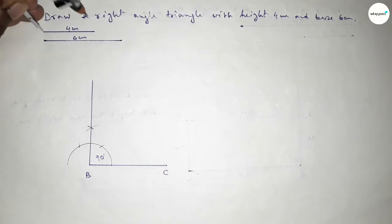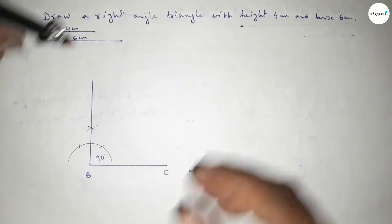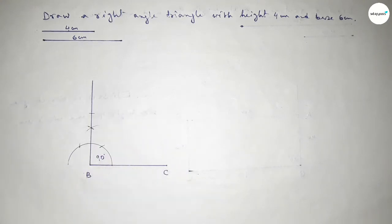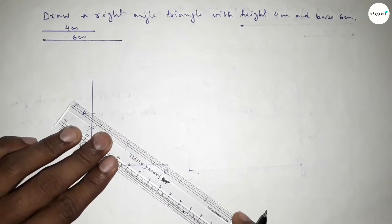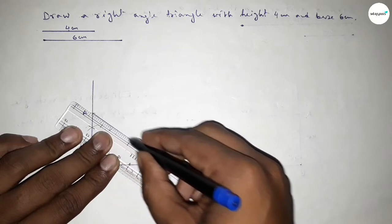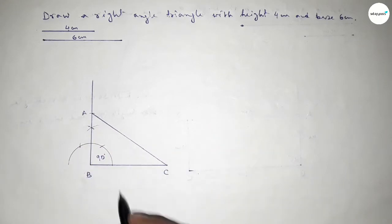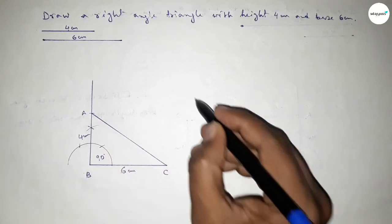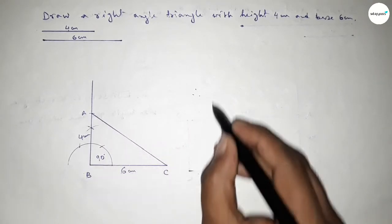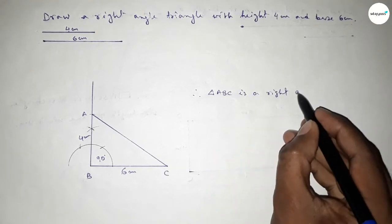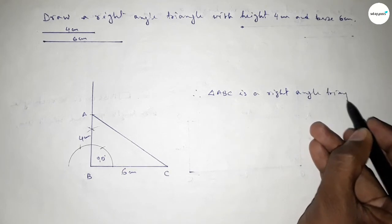Now taking the length of 4 centimeters using the compass, placing it at point B and marking point A. Joining A and C to get triangle ABC — this side is 6 centimeters and this side is 4 centimeters. Therefore, triangle ABC is a right angle triangle with height 4 centimeters and base 6 centimeters.